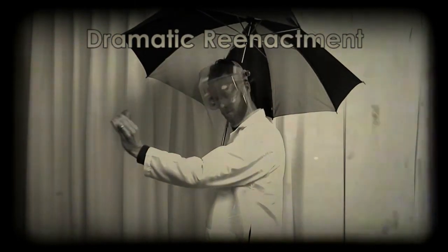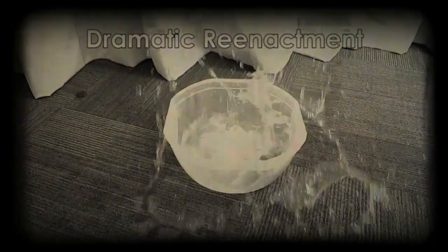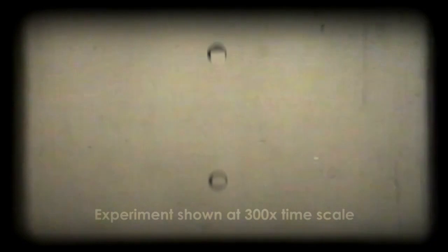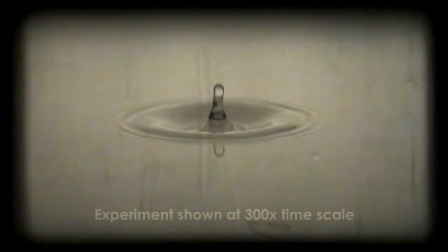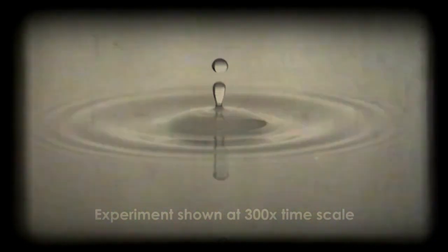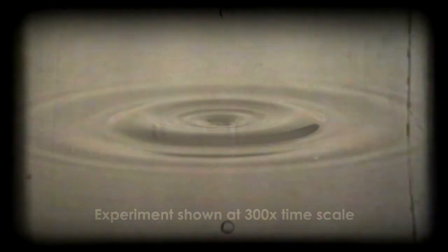Those ripples are waves. As we are all aware, you can describe the wave by the height of its ripple, its amplitude, and by how many ripples cross a given point every second. That is its frequency.